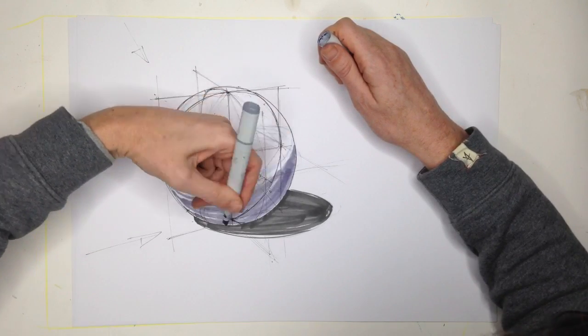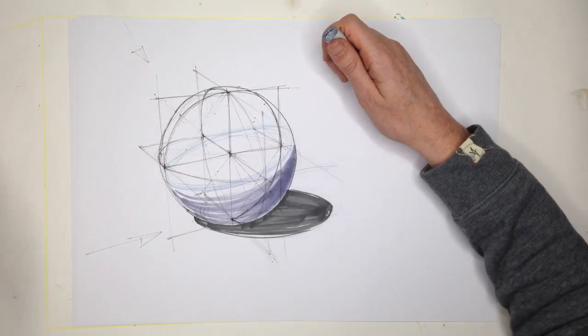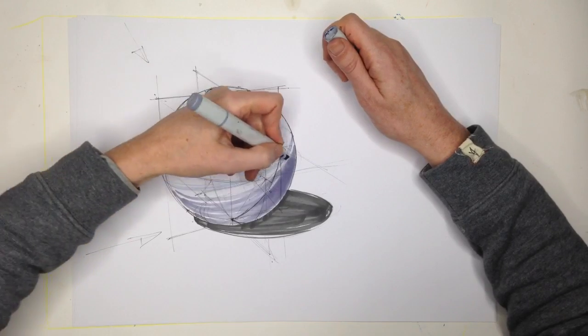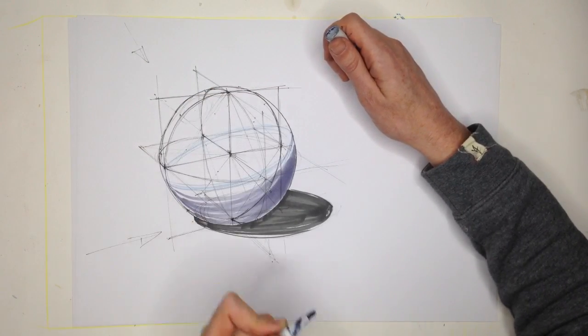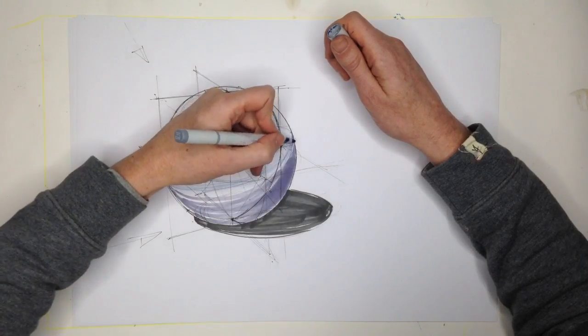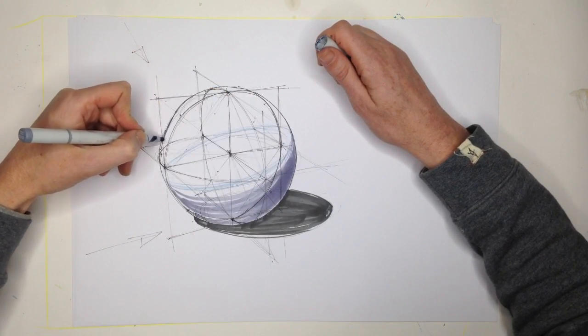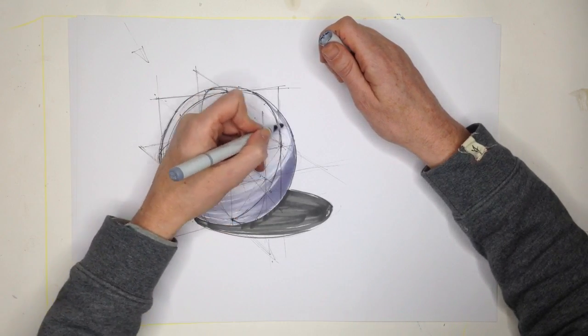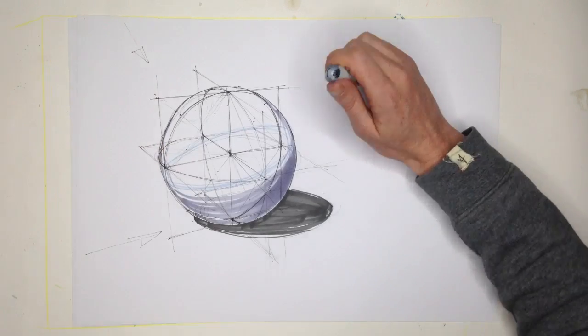Try and make it a little bit darker here, the core shadow. And of course with a marker, it's very hard to get a nice smooth gradient. You're getting a fairly sudden jump into the dark side of it. So you can keep it a little bit sketchy.